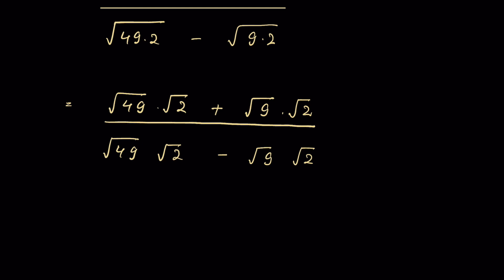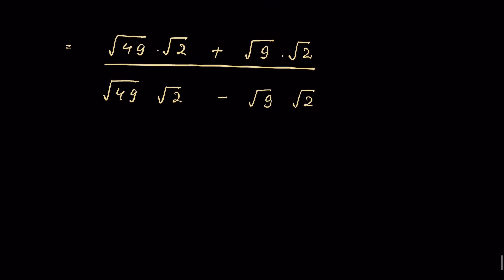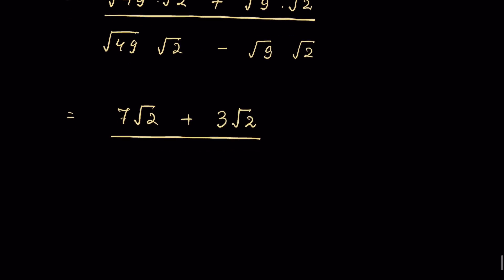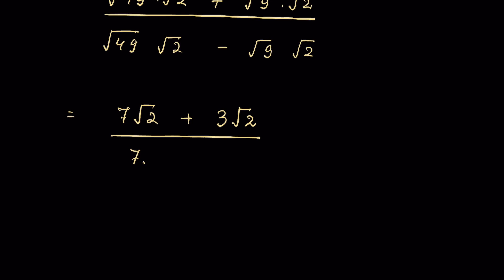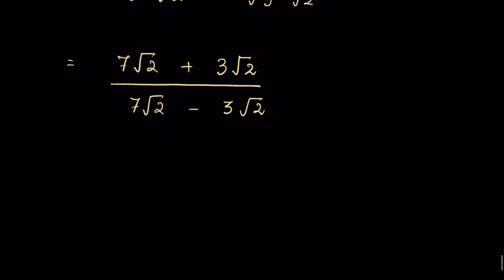Now, √49 = 7 and √9 = 3, so the expression becomes (7√2 + 3√2) / (7√2 − 3√2). We can take √2 as a common factor in both numerator and denominator.